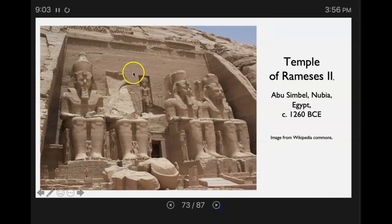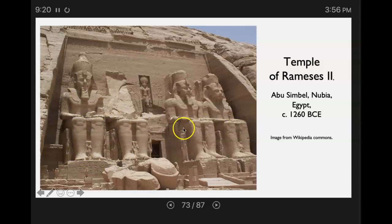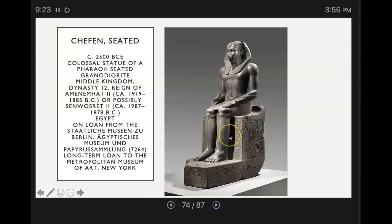This is the temple of Ramses II. Notice you've got these very interesting sitting sculptures. The legs don't seem proportionate to the rest of the body — they're thicker — but you've got these interesting seated structures. Here you've got Khafre seated, which is a colossal statue of a pharaoh.